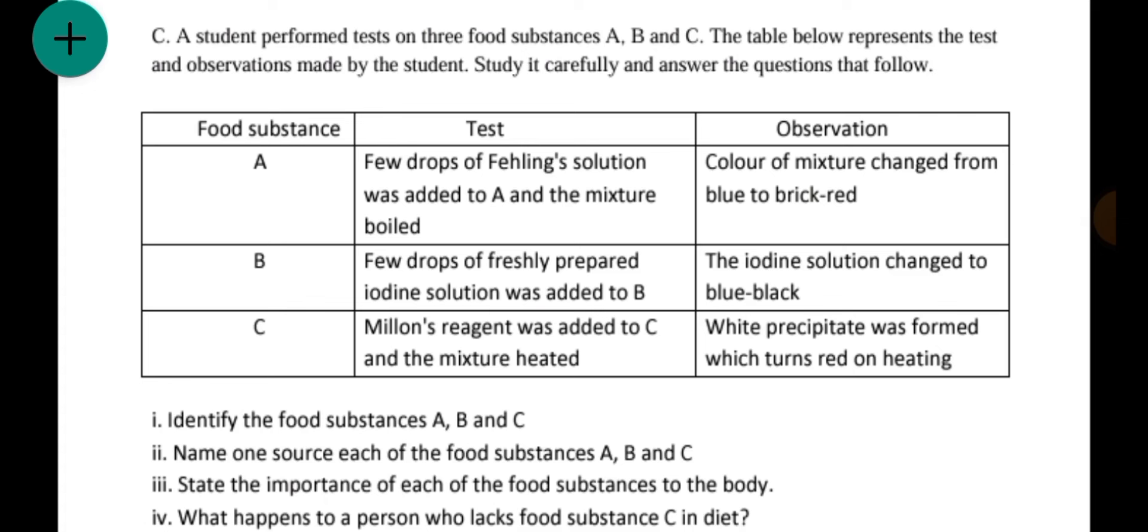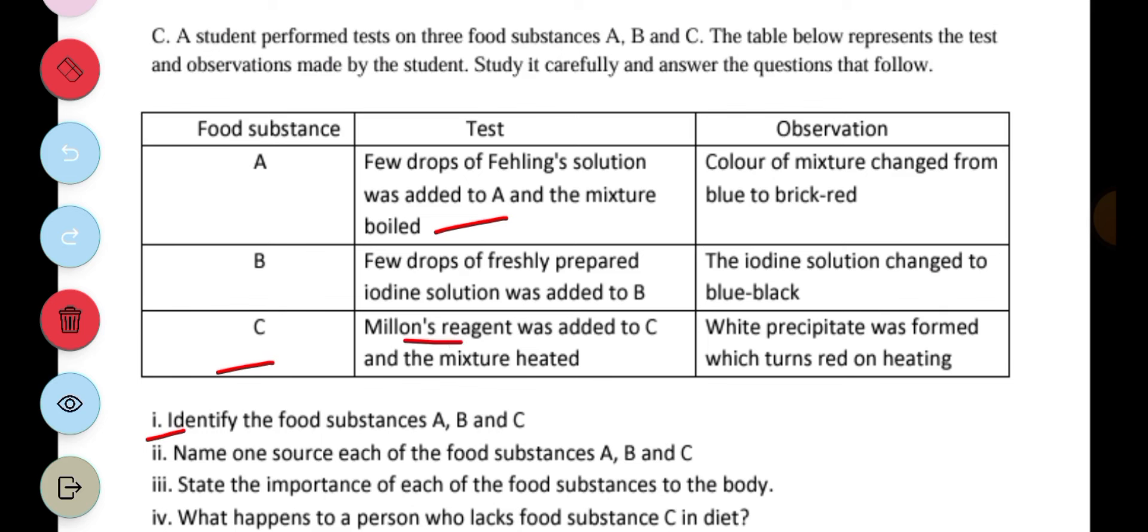Students performed tests on three food substances A, B, and C. When we read through the tests and observations, we realize that for the first one we're dealing with Fehling solution. Fehling solution is used to test for reducing sugars. Then B, which is iodine, is used to test for starch. And C, which has to do with testing with Millon's reagent, is a test for protein.